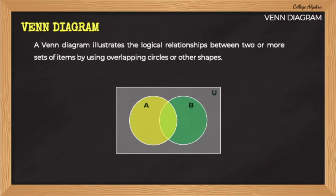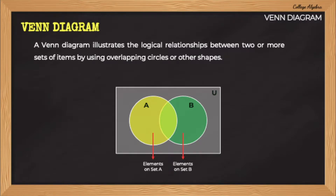Let us first tackle the concept of the Venn Diagram. A Venn Diagram illustrates the logical relationships between two or more sets of items by using overlapping circles or other shapes. We have here an example of a Venn Diagram using two overlapping circles. Remember that we can use any shape to represent a set of items. In this example, the sets of items are set A and set B. Inside these sets are the elements. The part where the two circles intersect is called intersection. Here we can find the elements common to set A and set B.